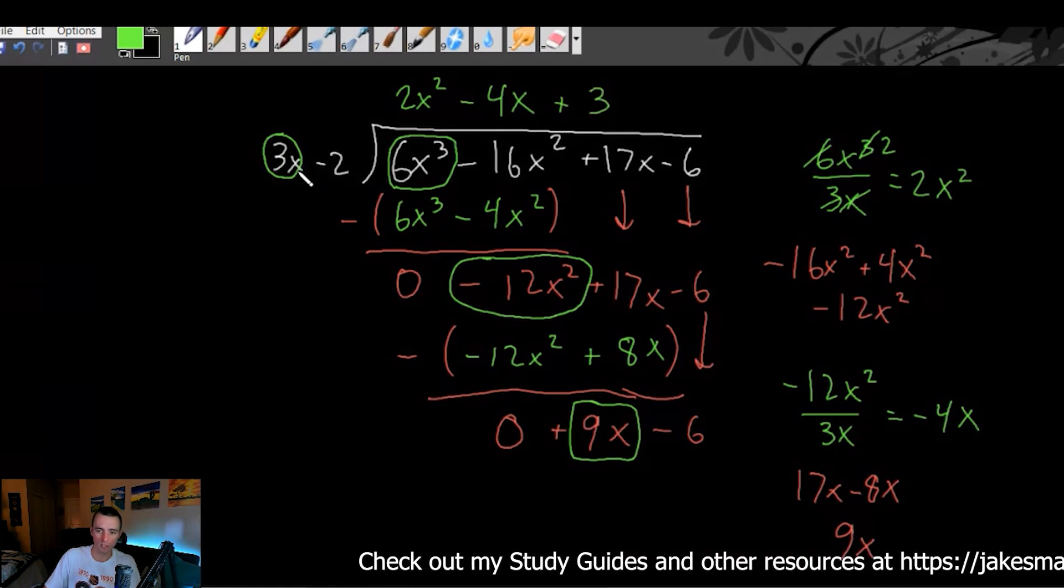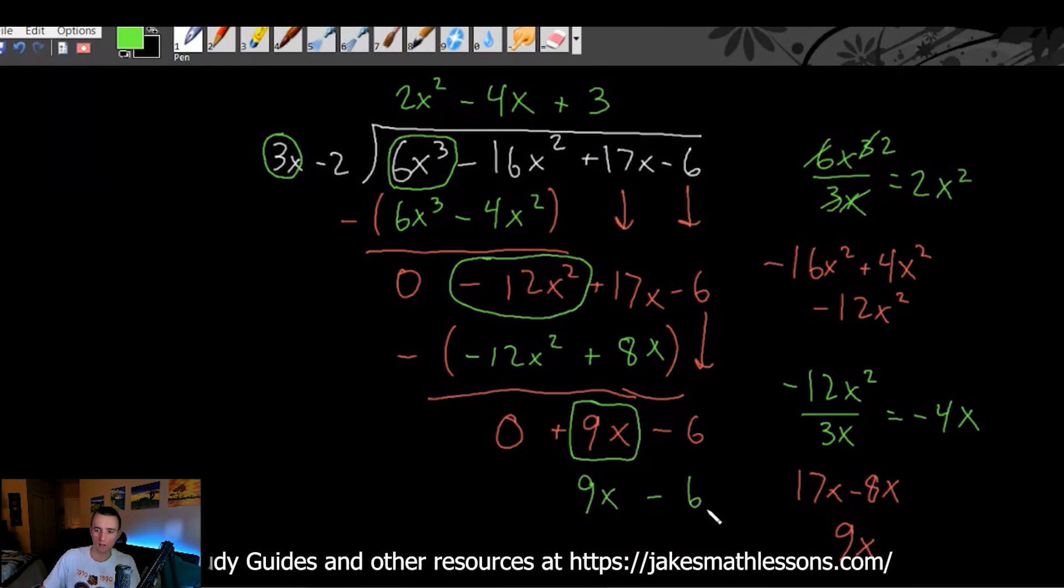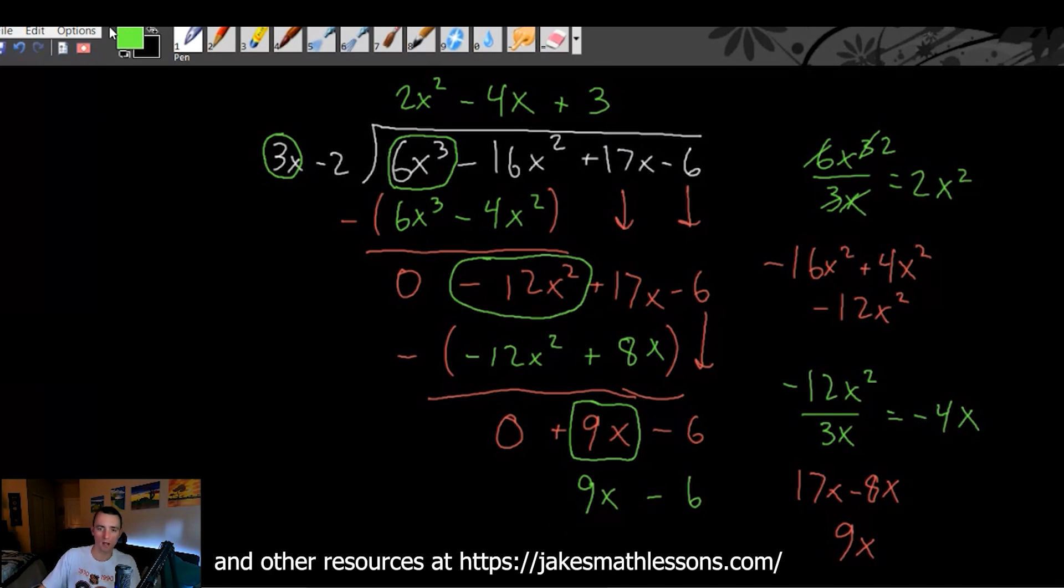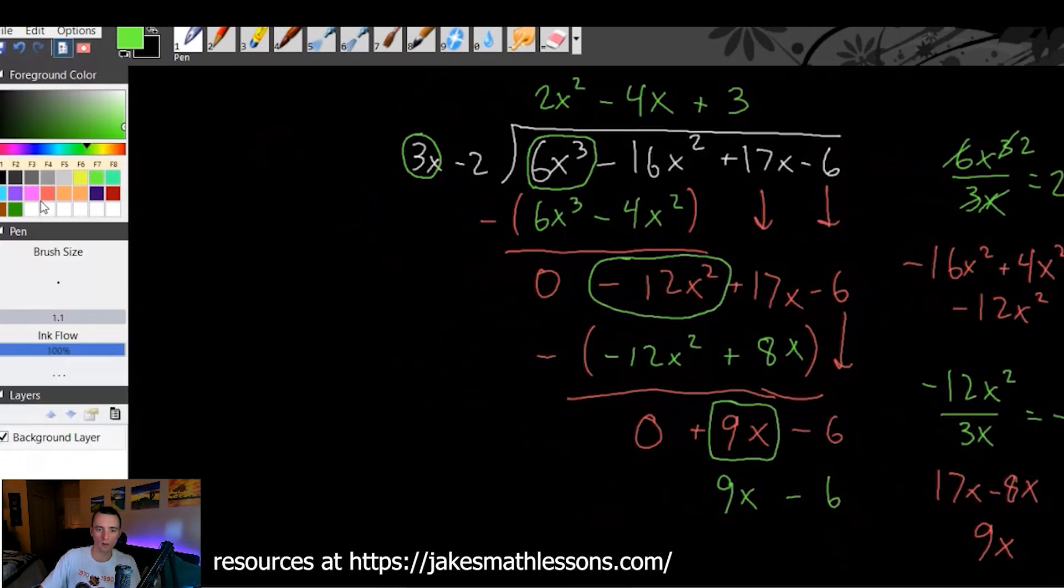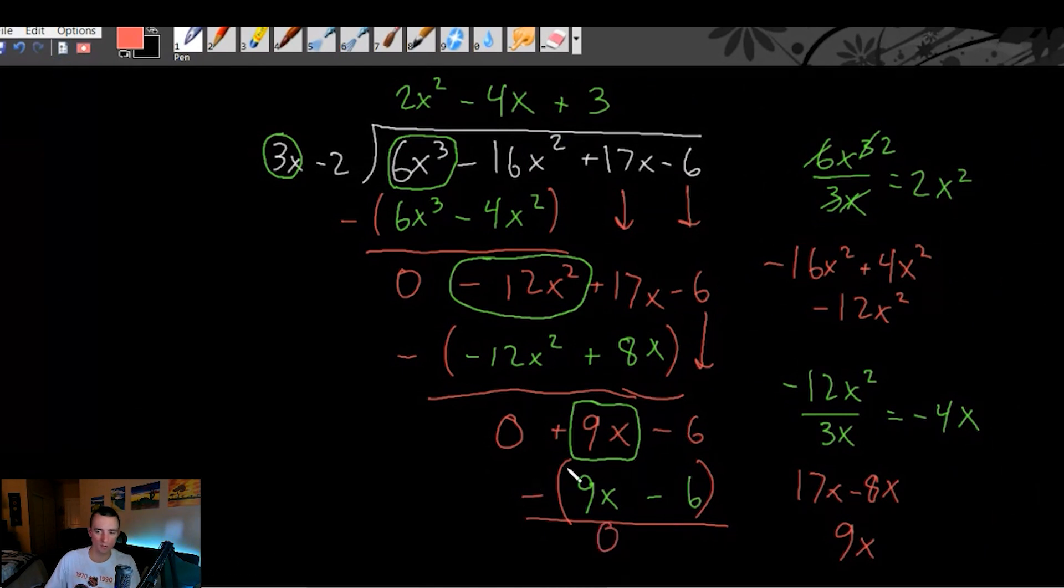Then we do 3 times each of these terms over here. So 3 times 3x gives us 9x. 3 times negative 2 gives us negative 6. And then again, we are going to subtract this whole thing from this whole thing. So 9x minus 9x gives us 0. Negative 6 minus negative 6 is the same as negative 6 plus 6, also gives us 0.